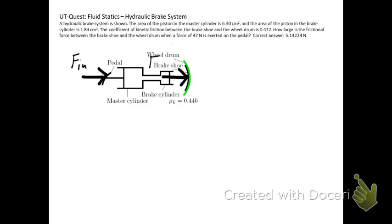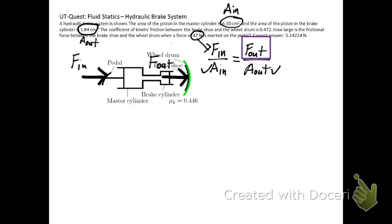We put an input force on the pedal and that gives us an output force here onto the brake shoe. To solve that problem it's just merely a ratio of the two forces and areas, and we're given all this information. We have our input force that we put on the pedal, we have our area of our input cylinder, the area of our output cylinder, all given so we can calculate the force out.